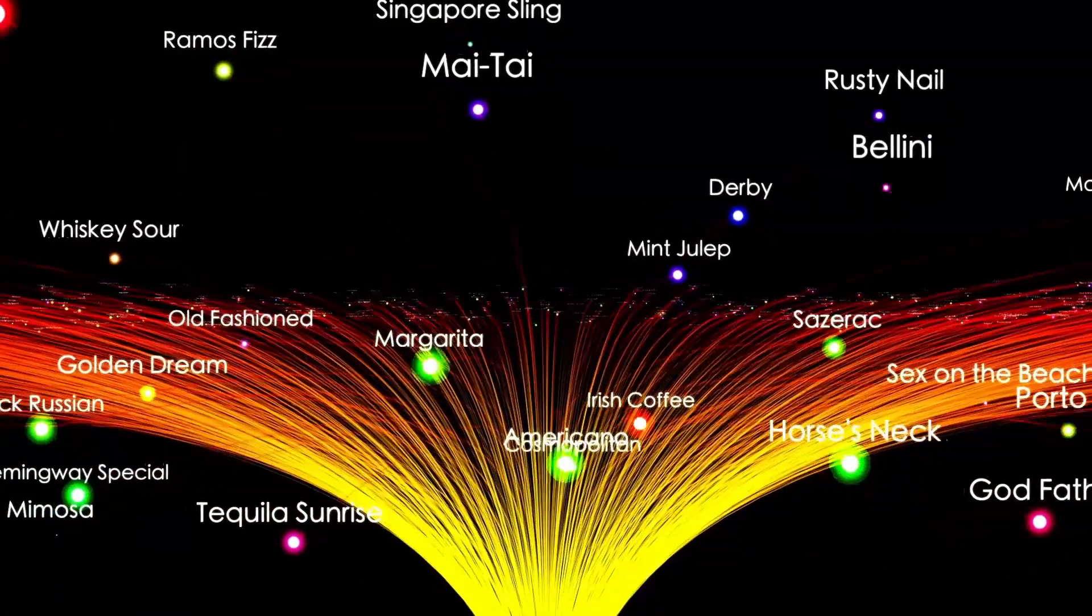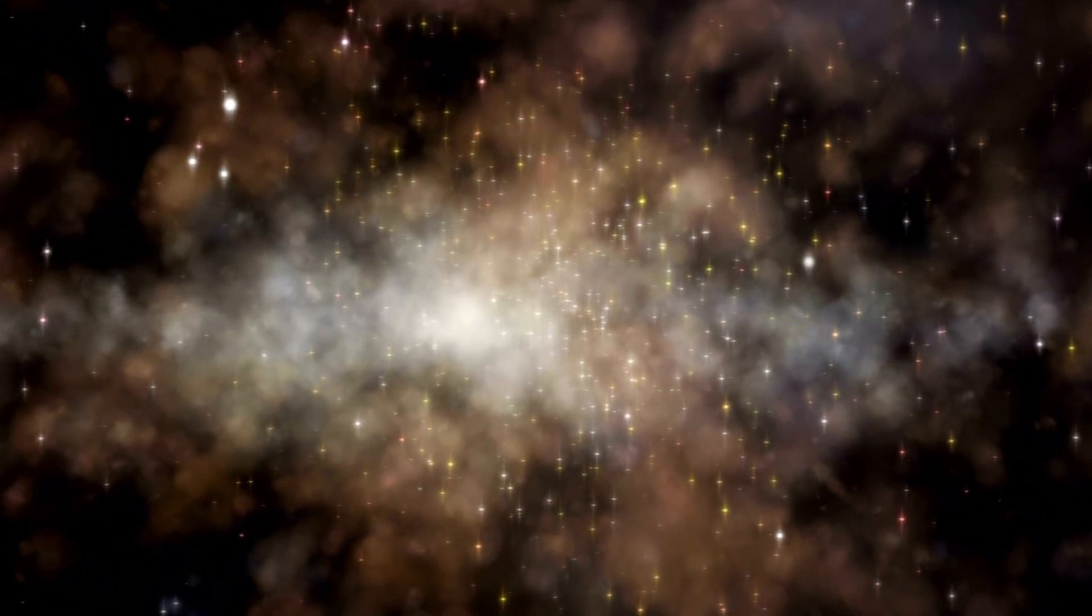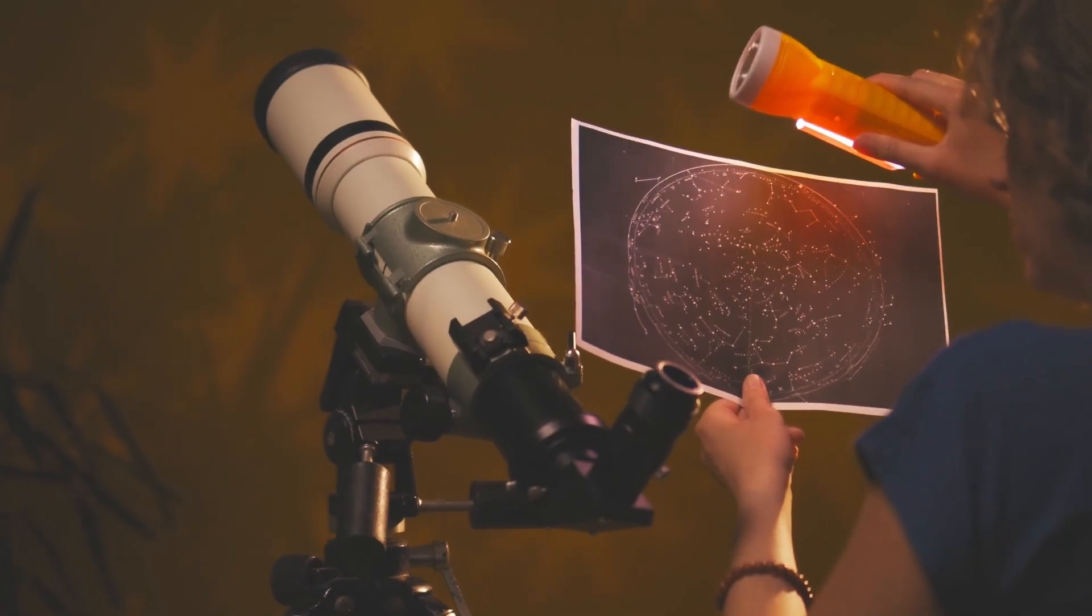The team triple-checked their source data. This wasn't edited or altered imagery. It came from the original transmissions. And as Voyager 2 continued its journey beyond the solar system, it crossed the heliosphere, that protective bubble shielding our planetary system from interstellar radiation.